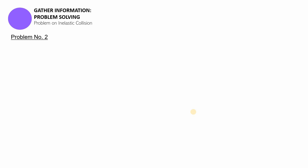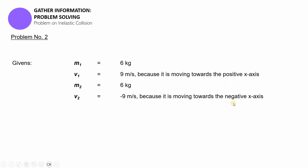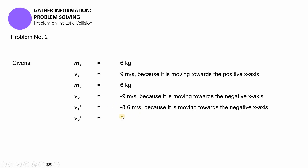I want you to take some time to solve that problem yourself. Once you're through, go back to this video and play it so we can work on it together. If you're done, let us proceed with answering it. The following are the givens: M1 has 6 kilogram mass and is moving 9 meters per second towards the positive x-axis. M2 is 6 kilograms and is moving negative 9 meters per second towards the negative x-axis. After the collision, V1 prime — M1's velocity — is now negative 8.6 meters per second because it is now moving towards the negative x-axis. We're going to be looking for V2 prime, the velocity of M2 after the collision.